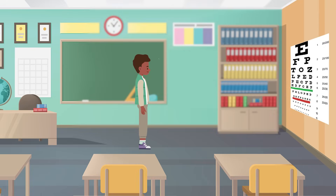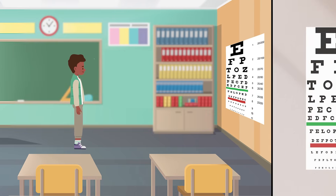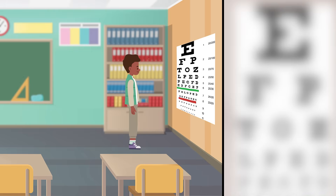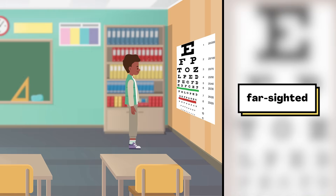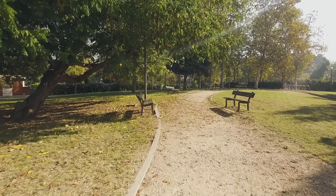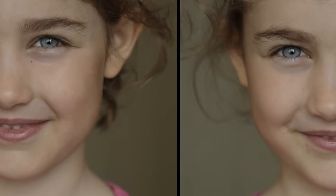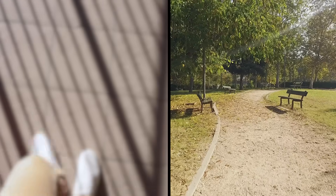Some people, when they use an eye chart, find out the opposite. They can see clearly from several steps away, but when they step up close, the chart looks blurry. That's a sign that they are farsighted. Some people see blurry both near and far, or see pretty clearly from both distances. Some find out that one eye sees more clearly than the other. There are lots of possible differences.